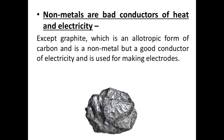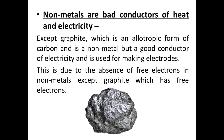Exception is graphite. Graphite is an allotropic form of carbon — carbon is a non-metal — but graphite is a good conductor of electricity. That's why it is used for making electrodes. Graphite, even being a non-metal, is a good conductor of electricity. This is due to the presence of free electrons in graphite, whereas other non-metals do not have free electrons.